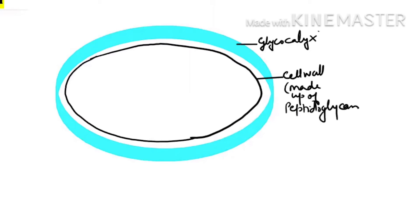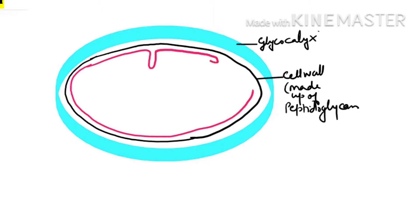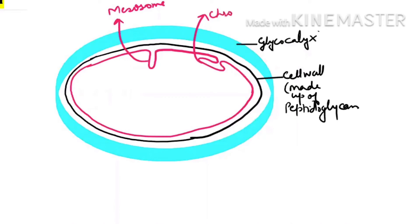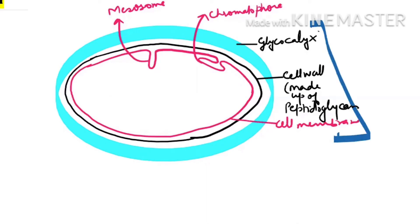Inner to the cell wall is the cell membrane. The cell membrane makes infoldings — one type of infolding is known as mesosome, and another infolding which has color is called chromatophore. Both mesosomes and chromatophores are modifications of the cell membrane.